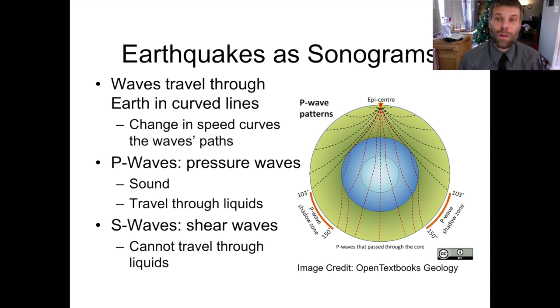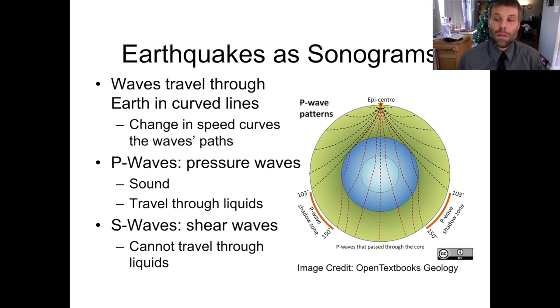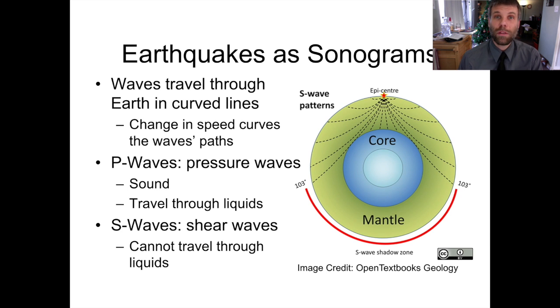The shear waves, on the other hand, hit that liquid outer core and they bounce off. So they're going to hit that liquid outer core going down, and then they're going to bounce off and go back in some random direction. So we see a big shadow on the far side of the Earth where no S waves are going to show up. You'll see that there is a little bit of a shadow zone caused by the bending of the P waves as they move through the Earth's core, but it's nowhere near as extensive. So we can take advantage of these different properties to figure out what the inside of the Earth is like.